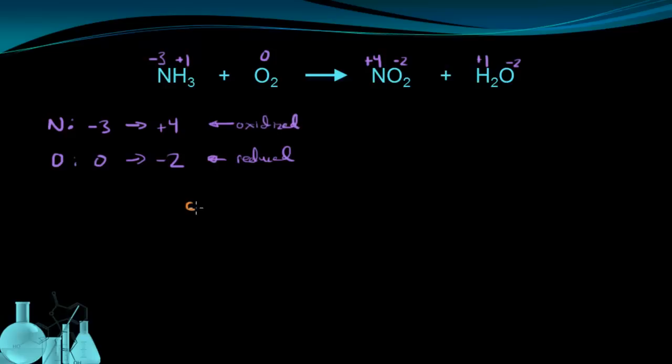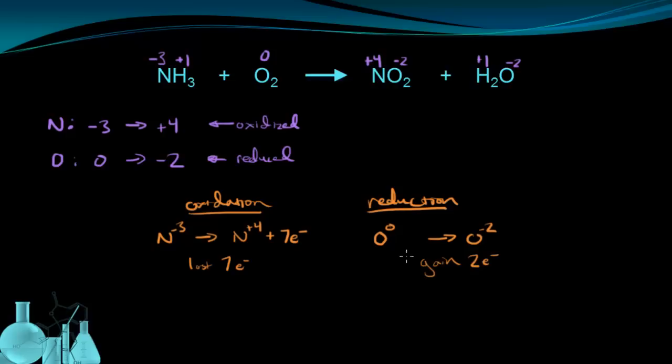We can now set up our oxidation and reduction half reactions. For oxidation, nitrogen started at minus 3 and became N plus 4. Nitrogen going from minus 3 to plus 4 means it lost 7 electrons. We write lost electrons on the product side. For reduction, oxygen started off as zero and ended up as minus 2. That means there was a gain of electrons, specifically a gain of 2 electrons. We write gained electrons on the reactant side.